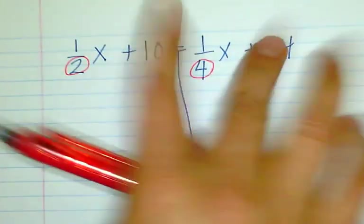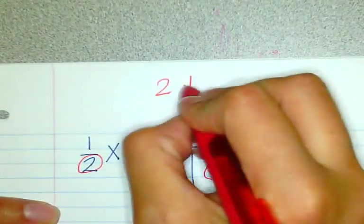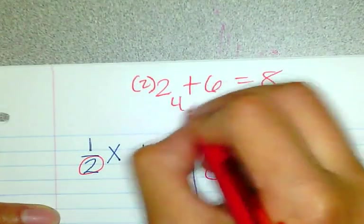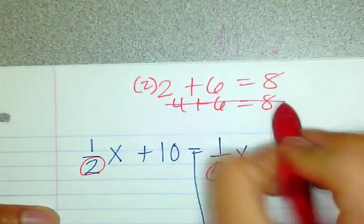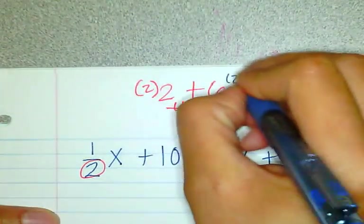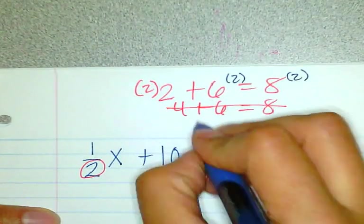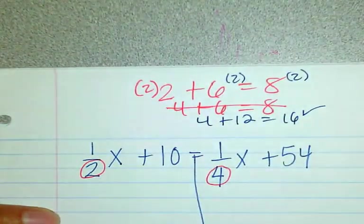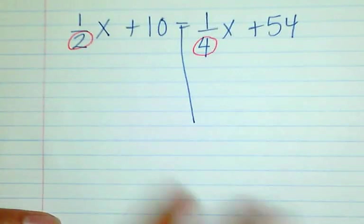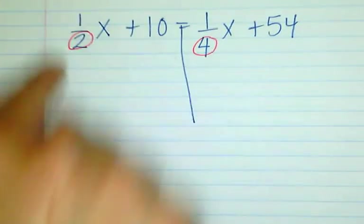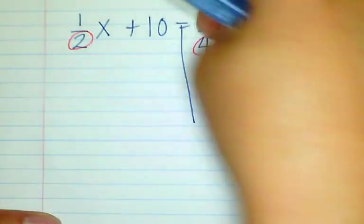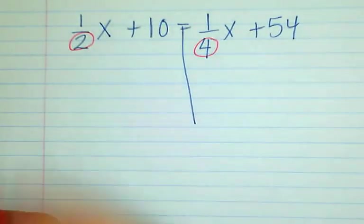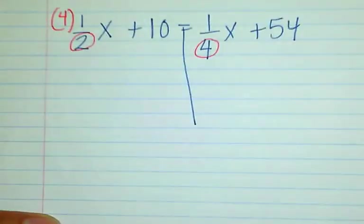I cannot multiply by different numbers whenever I want. If I decide to multiply one term by 2 and not the rest, the equation would no longer be true. But if I decide to multiply all of them by the same number, the equation would be true again. So going back to this, I have to find a number that would eliminate both the denominator of 2 and the denominator of 4. That number would be the least common multiple, which is 4. So I'm going to multiply everything by 4.